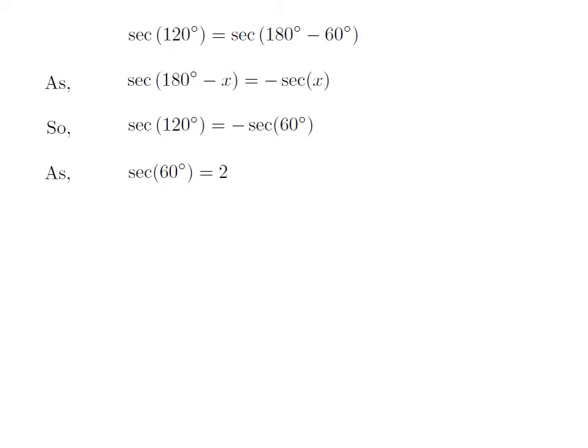We know the value of secant of 60 degrees is equal to 2. So, the value of secant of 120 degrees is equal to minus 2.